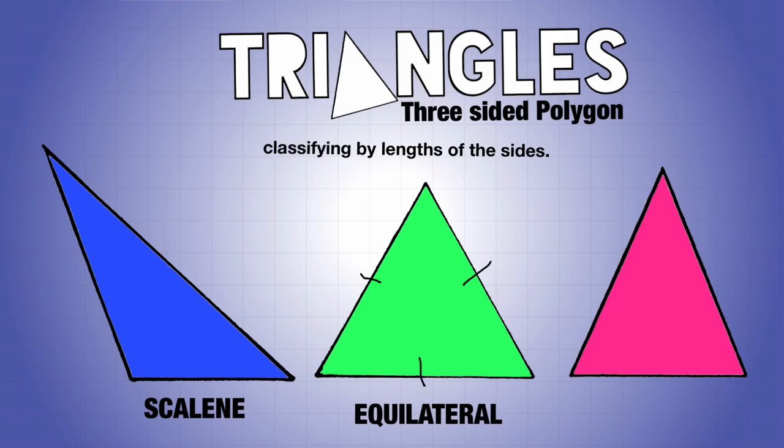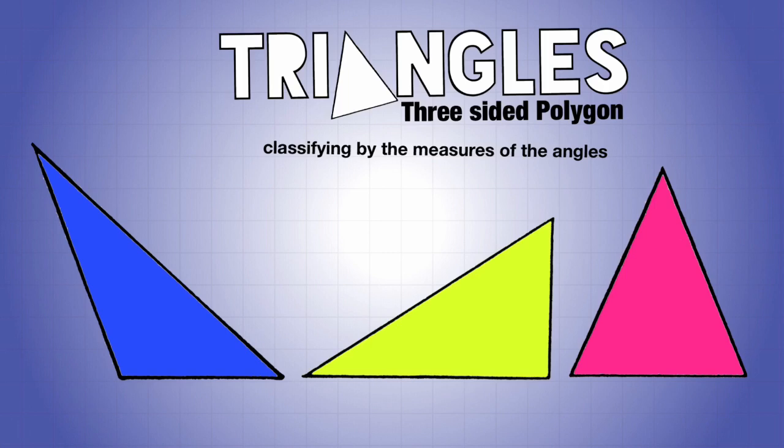Finally, when you have something that has two sides that are equivalent where the last side is not, we call that isosceles. So an isosceles means that there are two equal sides in the triangle.